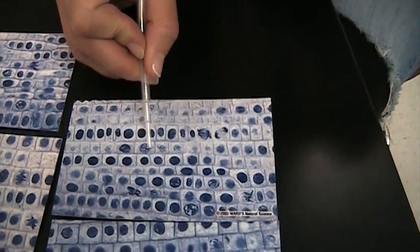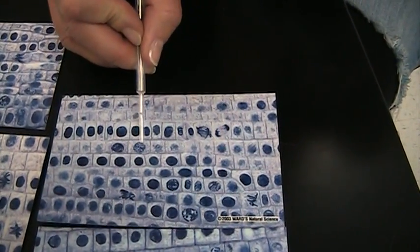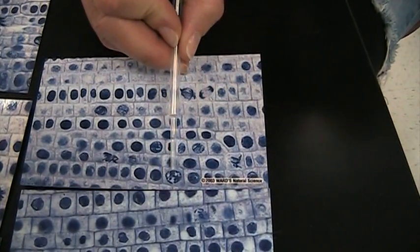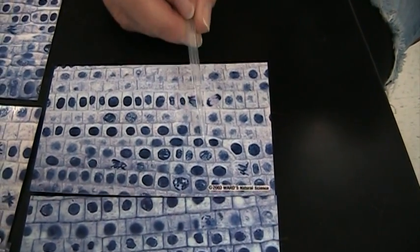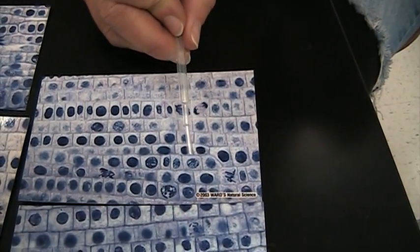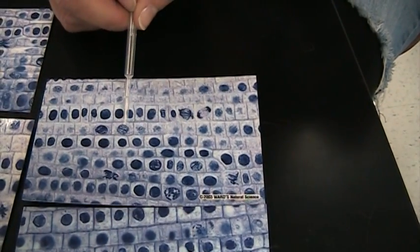Prophase is going to be where you see these black and white sections. So this cell is prophase, this cell is prophase. Any time you see kind of mottled or black and white portions, you have prophase.